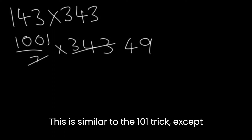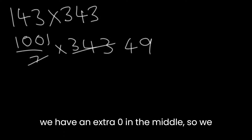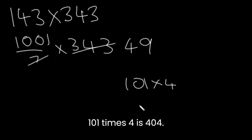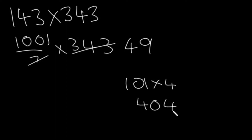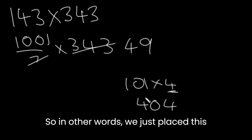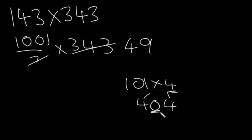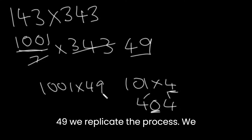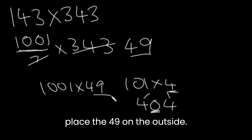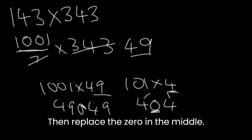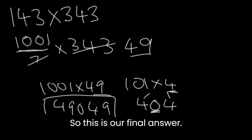This is similar to the 101 trick, except we have an extra 0 in the middle. So we can think of this as 101 times 49. 101 times 49 is 4949 — we just place the number on the outside and then place a 0 in between. So 1001 times 49: we replicate the process, placing 49 on the outside and the 0 in the middle. So 49049 is our final answer.